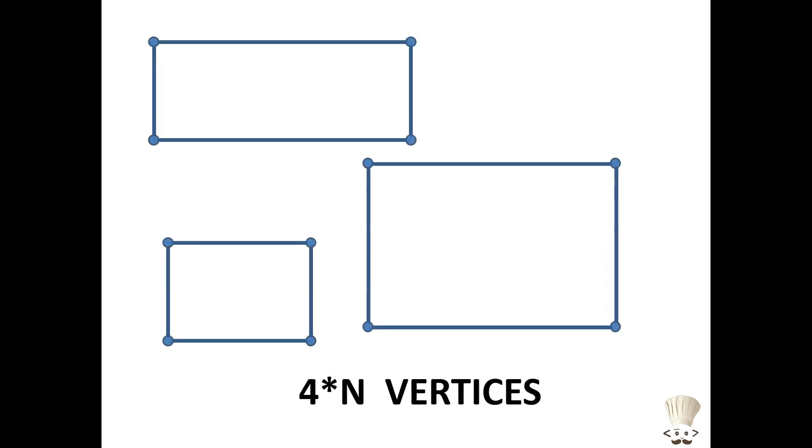Further, each and every rectangle has four vertices, and for n number of rectangles there should be four times n vertices. But unfortunately, chef has lost one of the vertices and we have given only four times n minus one vertices, and we are supposed to find that missing vertex.